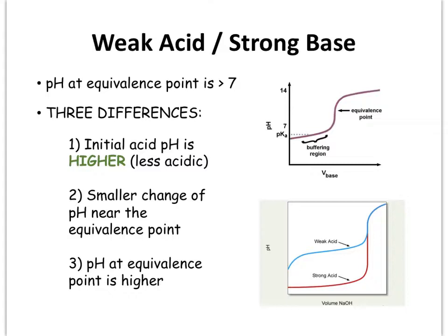There are also three other specific differences you can see in the graph itself. Initially, the pH is not as low — it's actually higher or less acidic — because you're dealing with a weaker acid. You can see the difference at the bottom of the graph as well. For the weak acid it is much higher, whereas for a strong acid you would expect this to be lower.